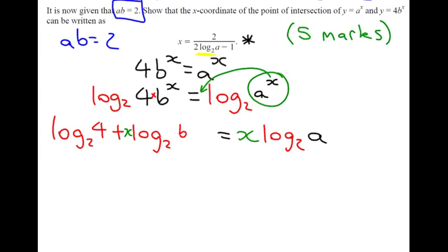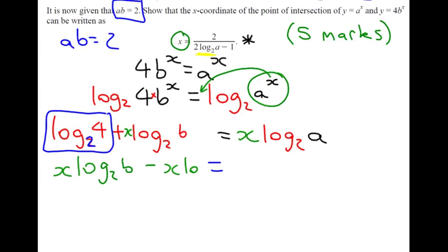So, now we need to simplify this and what we're aiming for is x equals. So we're going to make sure we've got our x's on the same side of the equation. So, x log to base 2 of B minus x log to base 2 of A by bringing this value across. We're going to also take away log to base 2 of 4. Now, log to base 2 of 4 means what power do you have to raise 2 by to get 4? And the answer is obviously 2. So, this represents the number 2, which we can take across. Log to base 2 of A equals minus 2.